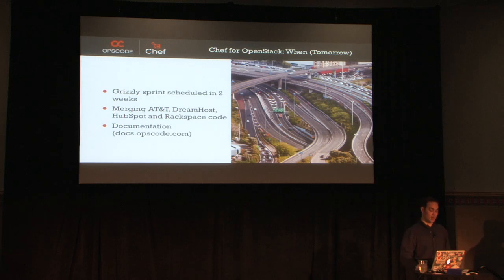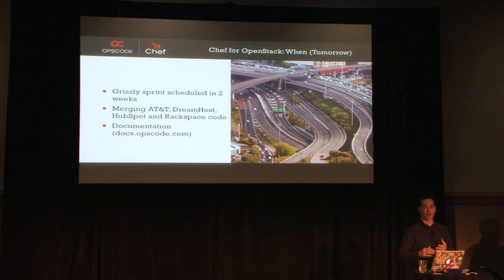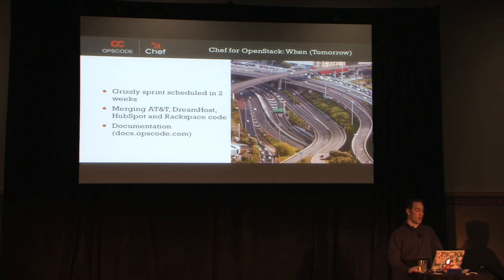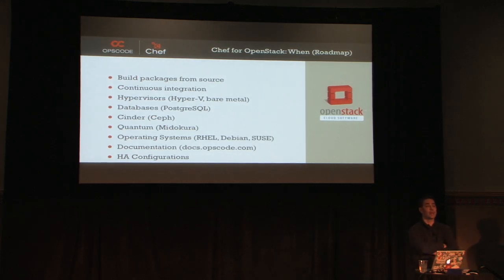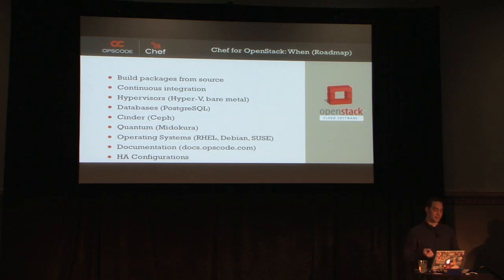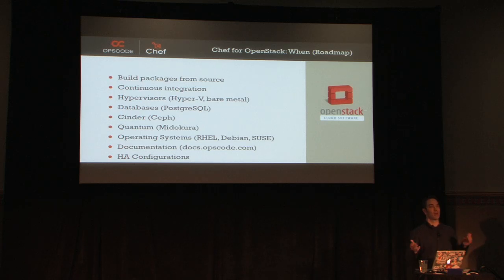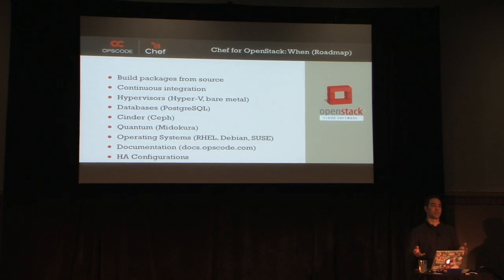Tomorrow — in about two weeks — we have a development sprint scheduled. We'll be working on Grizzly, merging in patches from AT&T, DreamHost, HubSpot, and Rackspace primarily, as well as a lot of other community pull requests. Those repos are all publicly available. Looking ahead on the roadmap: one thing we've been looking at as a community is deploying from source. The distros are nice, but they tend to have opinions that conflict with configuration management. So there will be some threads about building packages from source, and once we do that, we'll do continuous integration on it as well.